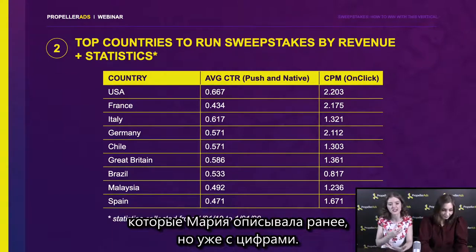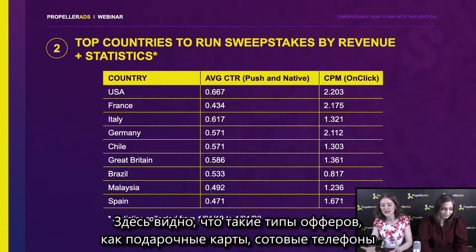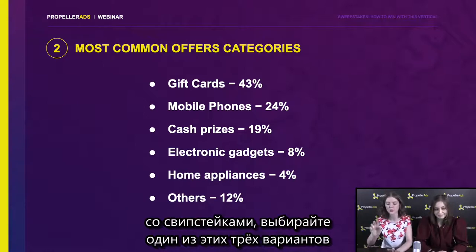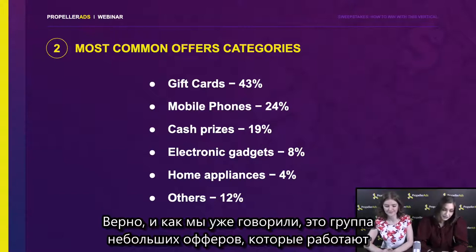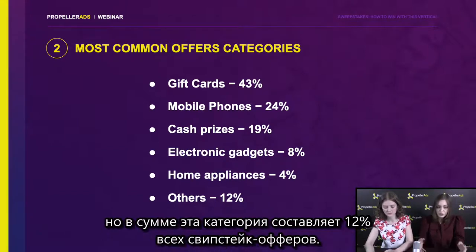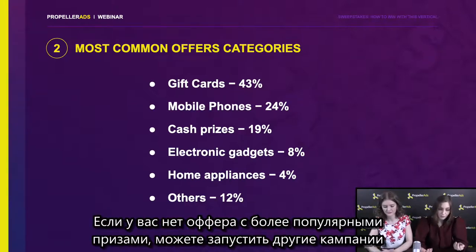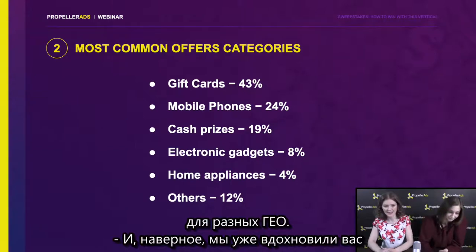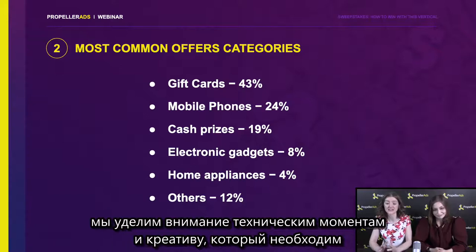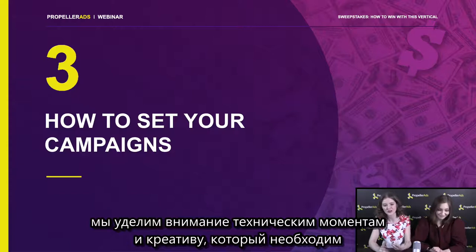Here you can see the same offer types that were described previously, but with numbers. Gift cards, mobile phones, and cash prizes are at the top of the list. If you're just starting with sweepstakes and don't know what offer to start with, choose one of these three options and you will win. As we've said before, it's a category of small offers that either work for only one GEO or are very local offers, like a local store gift card. But altogether, this 'other' category accounts for 12% of all sweepstake offers. So if you don't have an offer for more popular prizes, you may start launching a few campaigns for various GEOs.